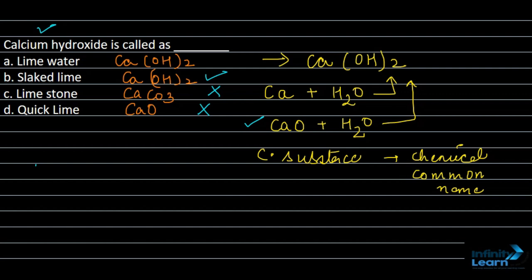But if we talk about lime water, lime water is basically an alkaline solution made when calcium hydroxide is sparingly soluble in water. But here we need to tell just about calcium hydroxide. So it is not lime water, it is slaked lime.